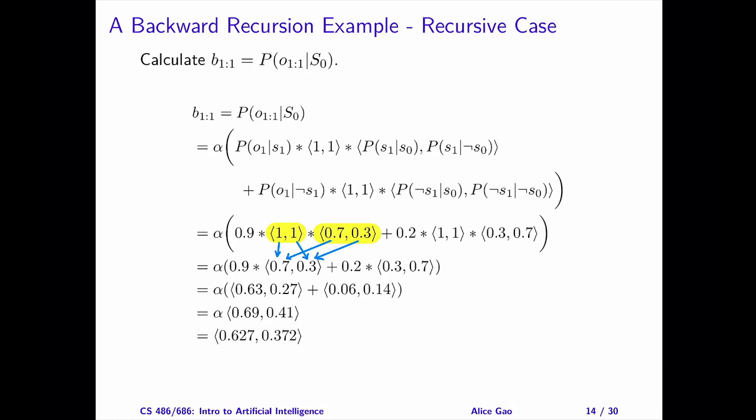For example, suppose that we want to multiply (1, 1) and (0.7, 0.3). The first value in the result is 1 multiplied by 0.7. The second value in the result is 1 multiplied by 0.3.